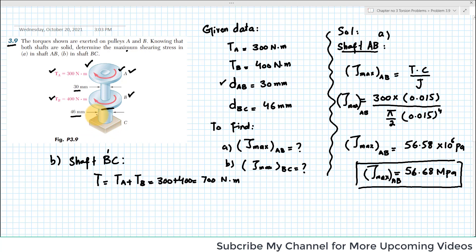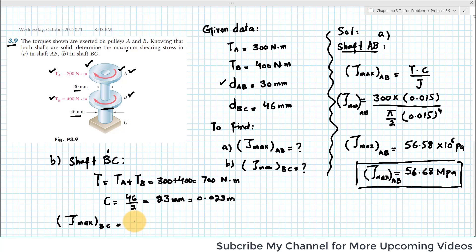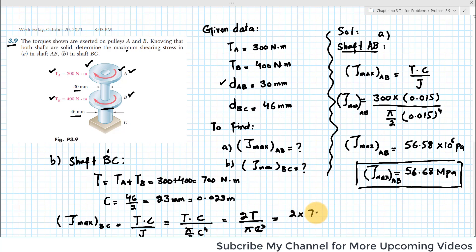The diameter of shaft BC is 46 mm, so the radius c equals 46 divided by 2, which is 23 mm, and converting to meters gives 0.023 m. Now putting values into τ_max in BC: τ_max = T·c / J, and since J = (π/2)c⁴, this simplifies to 2T / (πc³). Substituting: 2 × 700 Nm divided by π × (0.023)³.